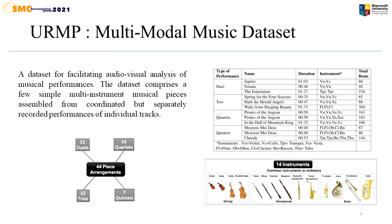For understanding this dynamics, we use the URMP dataset which has the audiovisual analysis of musical performances. The dataset comprises a number of multiple instruments and musical pieces, assembled and recorded with individual tracks. For each piece, they provided the musical score in MIDI format, the high-quality individual instrument recordings, and the video. This multi-modal dataset had four kinds of performances: 11 duets, 12 trios, 14 quartets, and 7 quintets. There were 14 different kinds of string, wind, and brass instruments present in the dataset, which was very useful for our experiment. All the data were classical pieces, so they had time-varying tempo and changing leadership attributes.